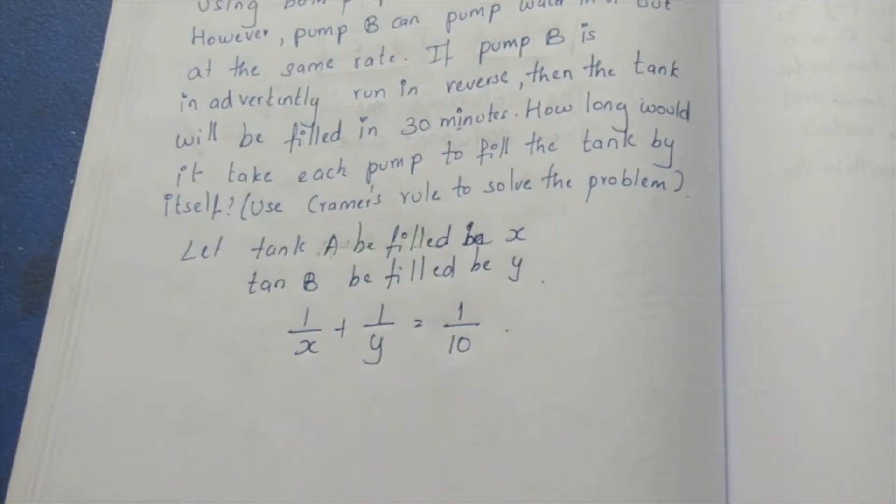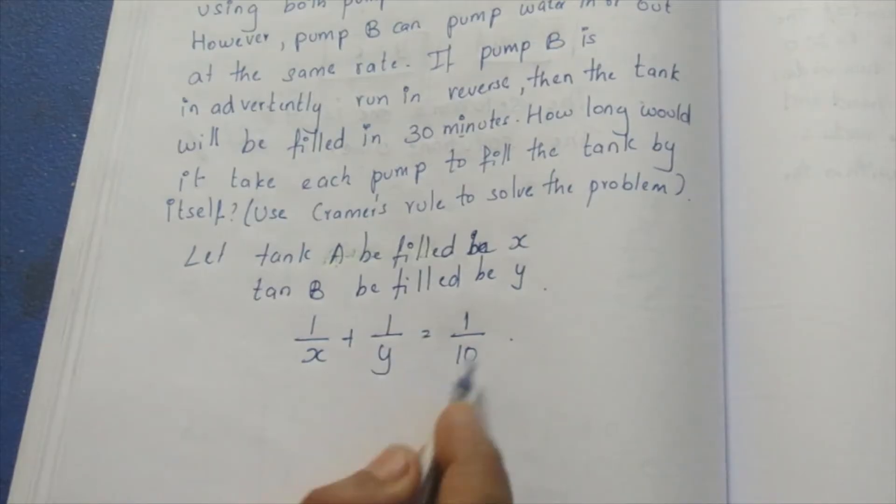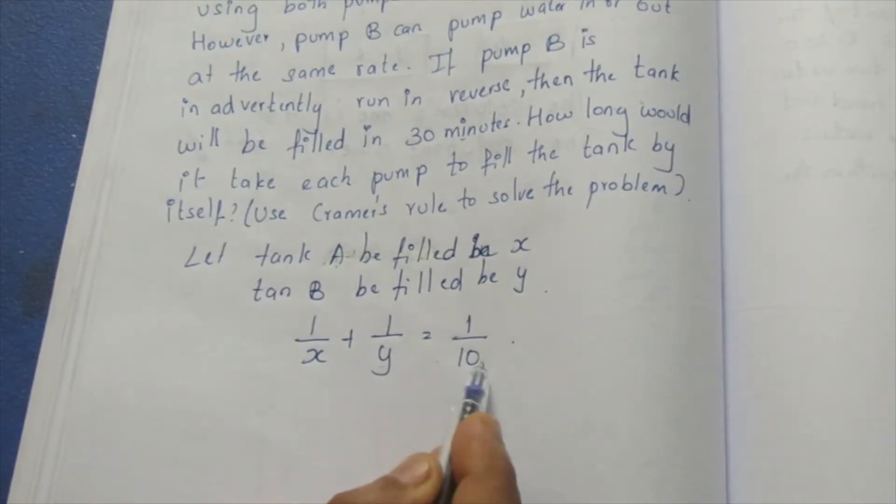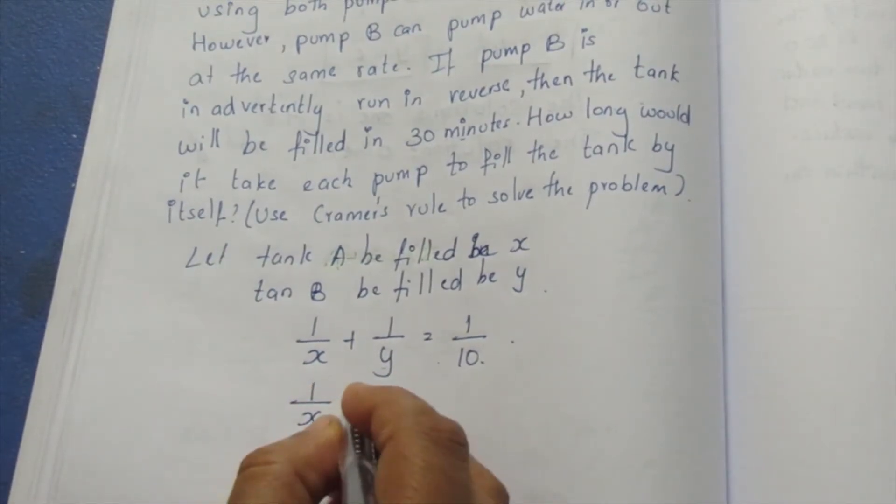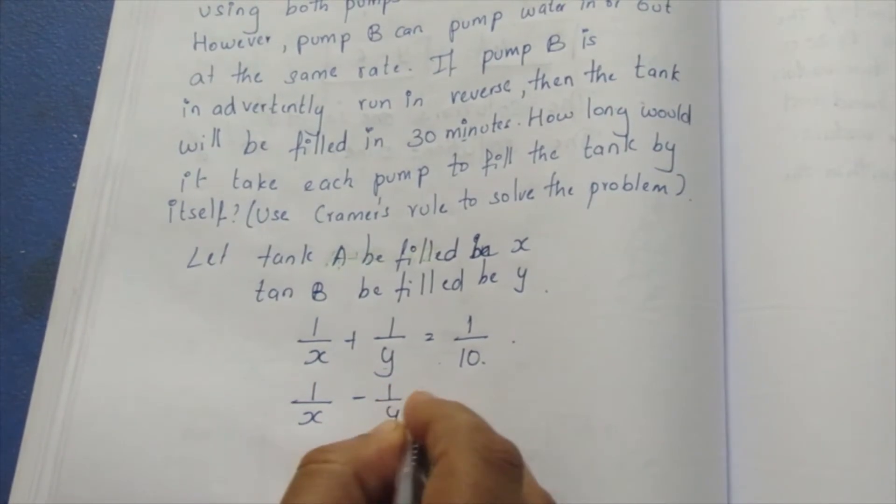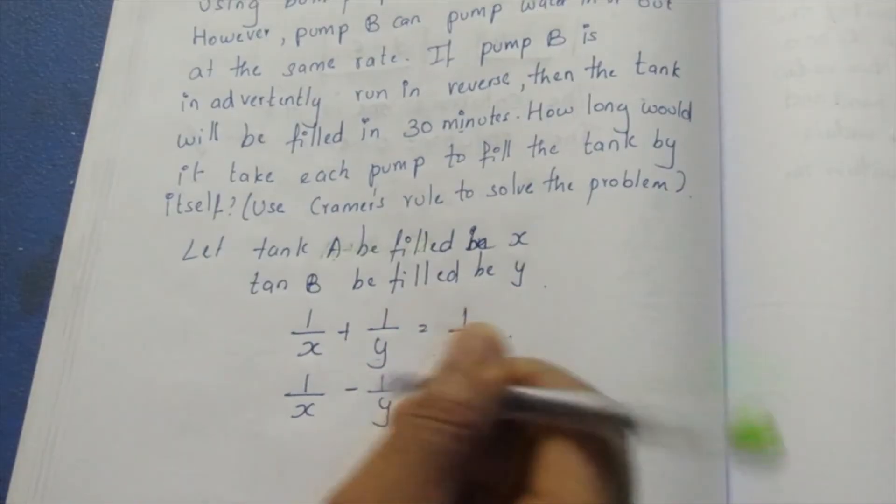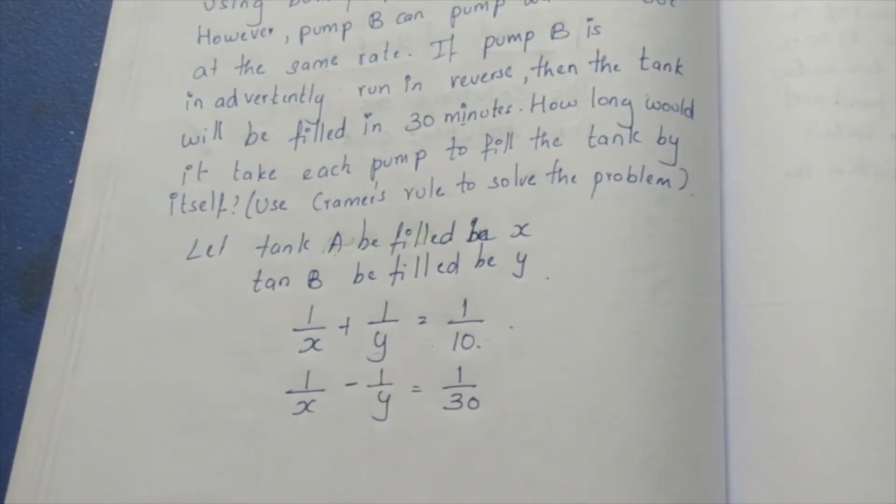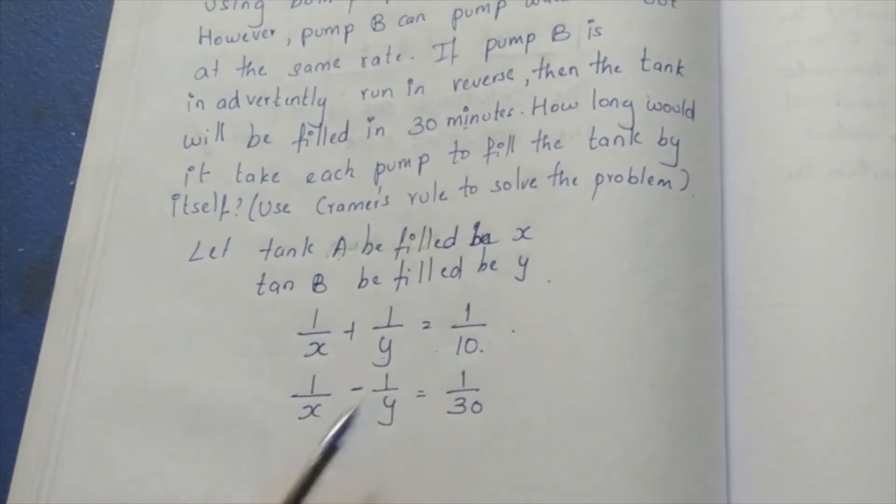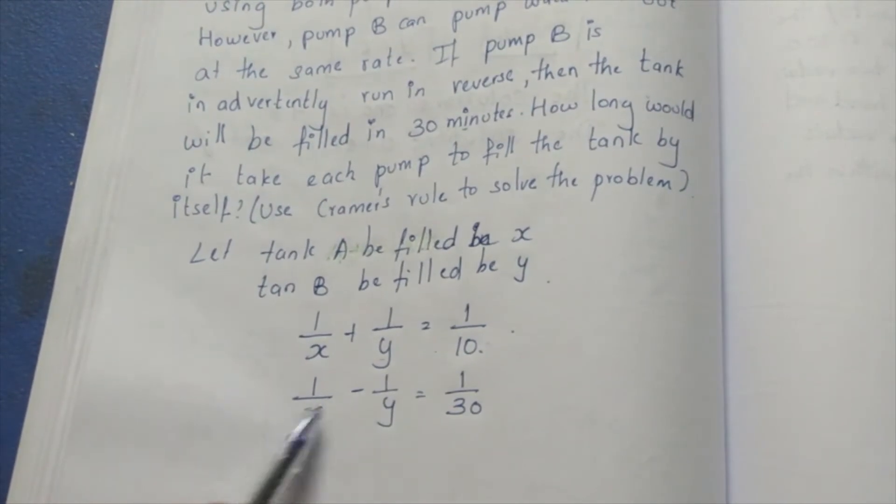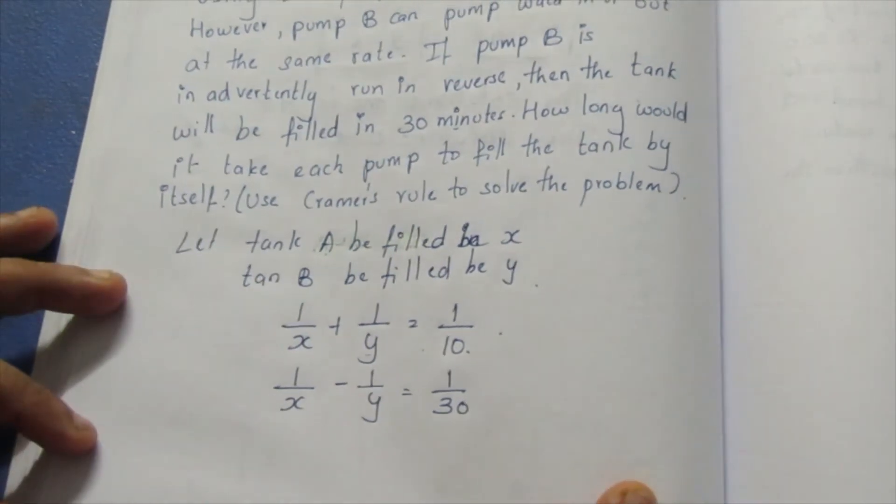When A and B work together, it takes 10 minutes. When B is in reverse, it takes 30 minutes. X and Y are all in minutes, so these are our equations.